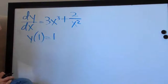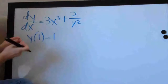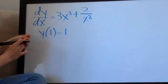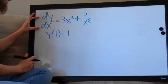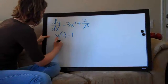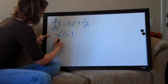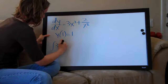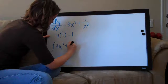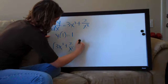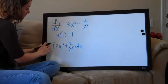With initial value problems, the first thing that we always do is take the integral of the equation dy over dx. So we'll go ahead and take the integral of this function — 3x cubed plus 2 over x squared — and then we add dx because it's part of integral notation.